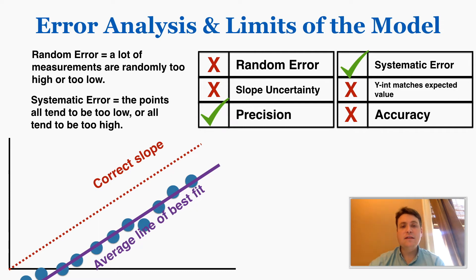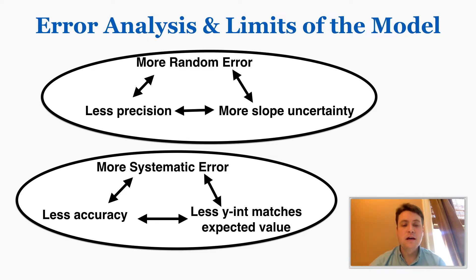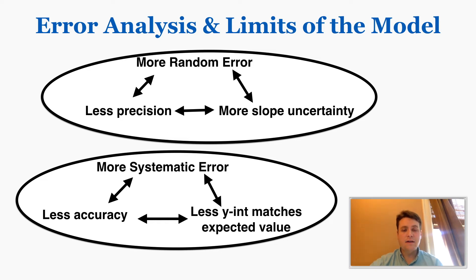That was a way of showing that this table is correct. Every double arrow means that one thing implies the other. If there's more random error, there's more slope uncertainty, and if there's more slope uncertainty, there's less precision. If there's more systematic error, there's less matching between the y-intercept and the expected value and less accuracy. These things are connected and will matter for how you answer these questions.